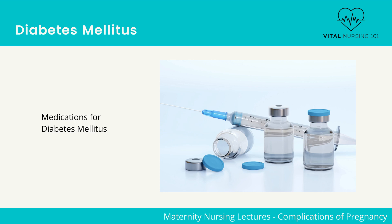Depending on the patient, insulin may be required. Insulin needs will change each trimester. For example, insulin needs decrease during the first trimester. During the second and third trimester, due to an increase in hormones such as HCS, which is an insulin antagonist, insulin needs increase.